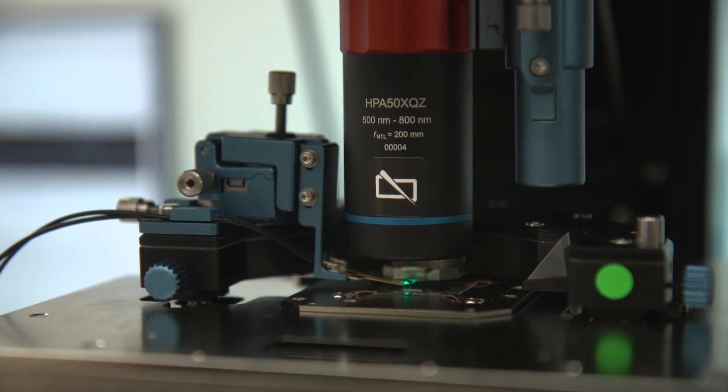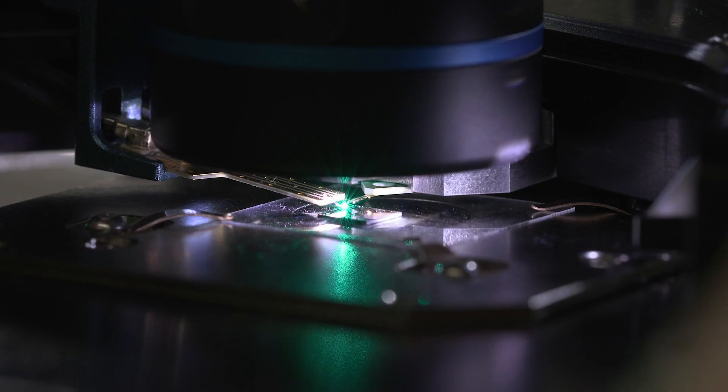So first, we actually need to find the NV center with a confocal scan. And when doing that, you see a bright light in the middle of the pillar. There is your NV.